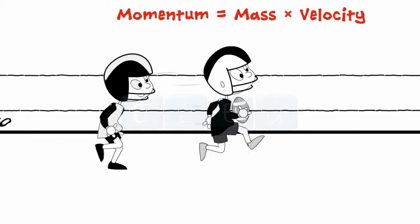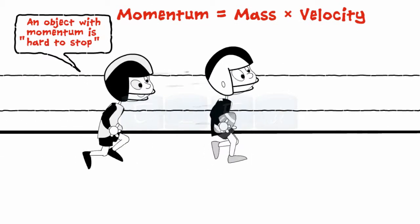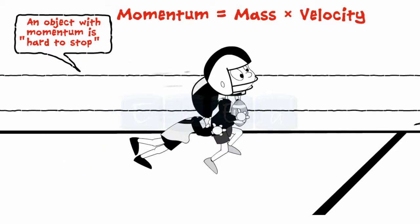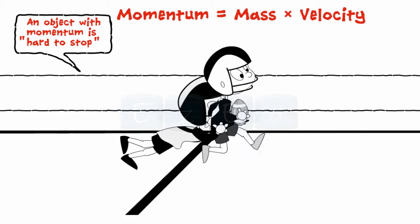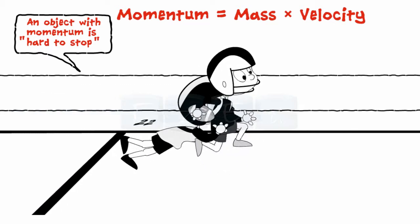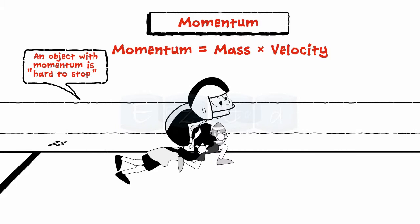A rugby player has great momentum which is hard to stop. To stop that player, force is applied against his momentum by another rugby player. The force applied by the player for an amount of time results in a change in his momentum.